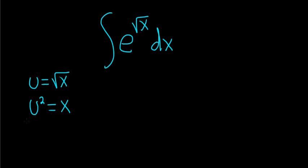Now you compute du. So you take the derivative of both sides. So this becomes 2u du equals dx. There it is.